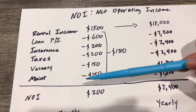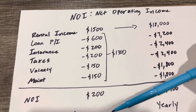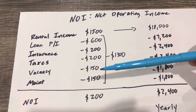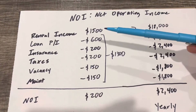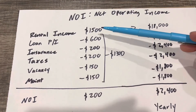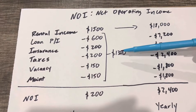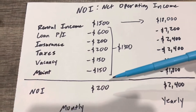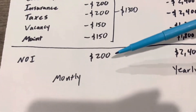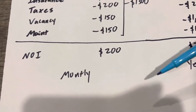Things break, so start building a cash reserve — no ifs, ands, or buts. In this scenario, we started with $1,500, $1,300 in expenses, and our NOI is $200 a month.